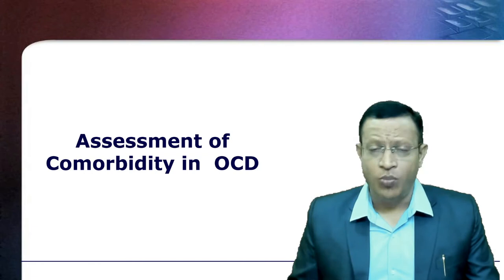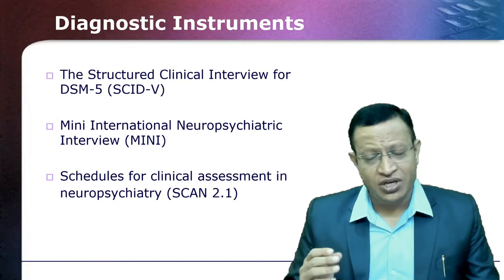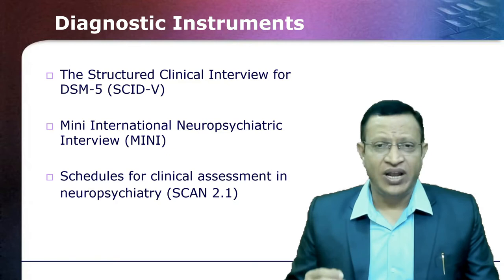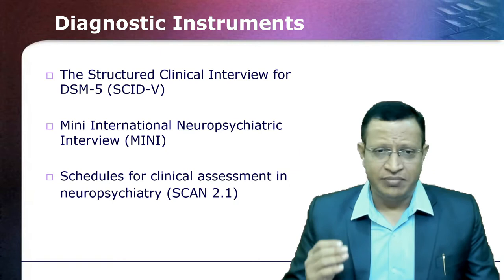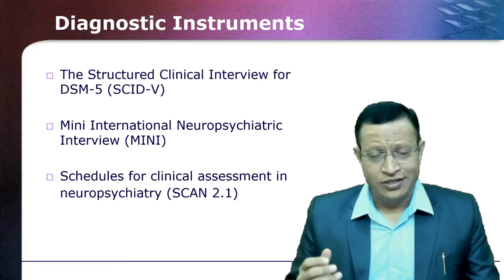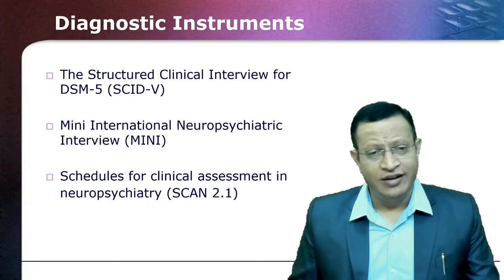Let's look into the assessment of comorbidity in OCD. Since comorbidity is the rule, we need to check for various comorbidities using diagnostic instruments — a checklist to know whether the patient has depression, social anxiety disorder, or GAD. You need a structured instrument like DSM-5 SCID-5 (Structured Clinical Interview for DSM-5) or the Mini International Neuropsychiatric Interview. Both are copyrighted, so you need permission. However, SCAN 2.1 — that is the Schedule for Clinical Assessment in Neuropsychiatry by WHO — is free and can be used.